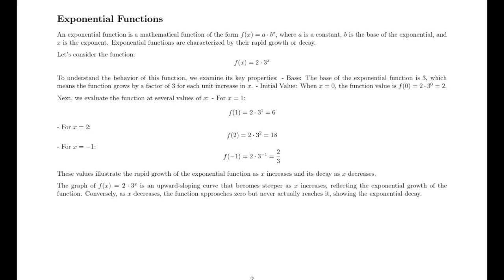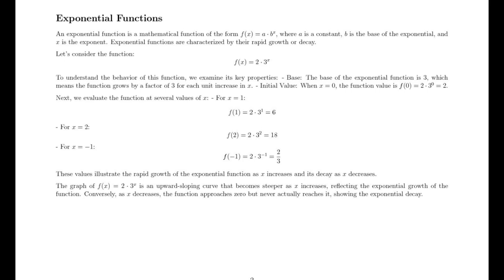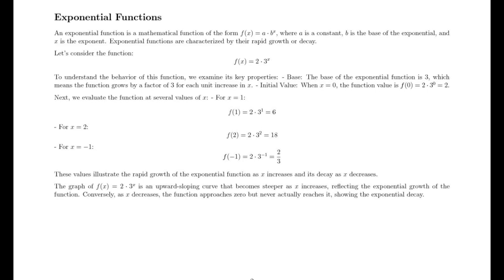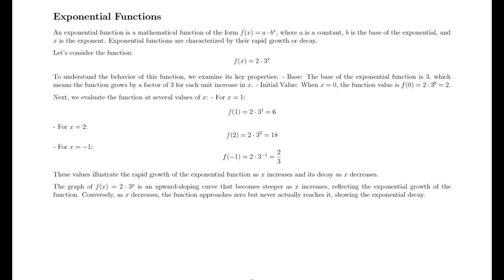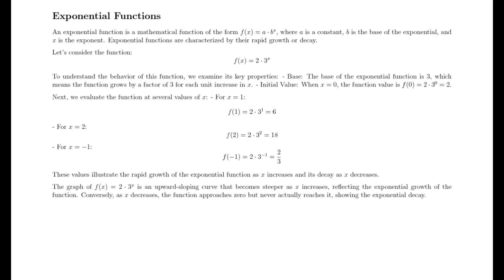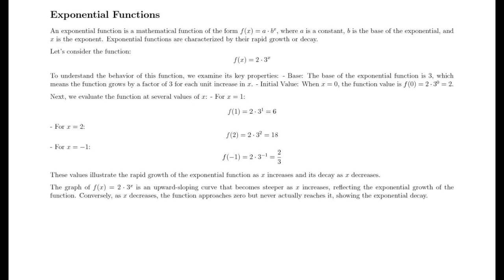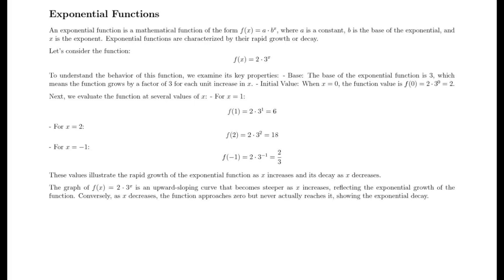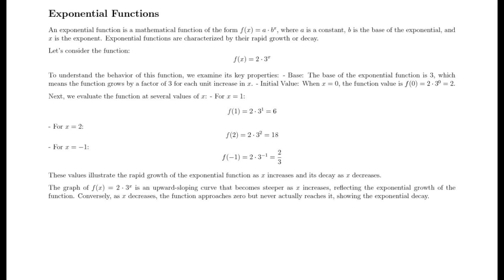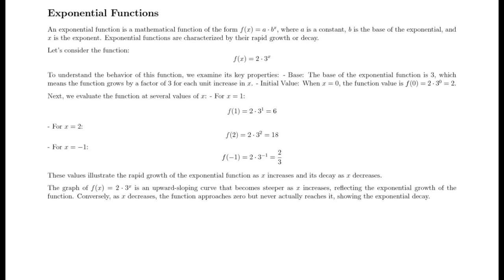These values illustrate the rapid growth of the exponential function as x increases and its decay as x decreases. The graph of f(x) = 2 · 3ˣ is an upward sloping curve that becomes steeper as x increases, reflecting exponential growth. Conversely, as x decreases, the function approaches 0 but never actually reaches it, showing exponential decay.